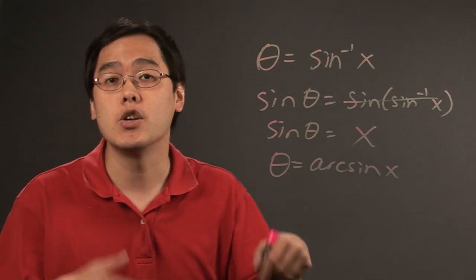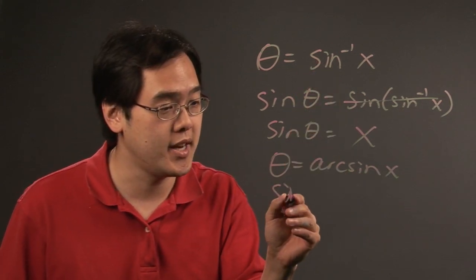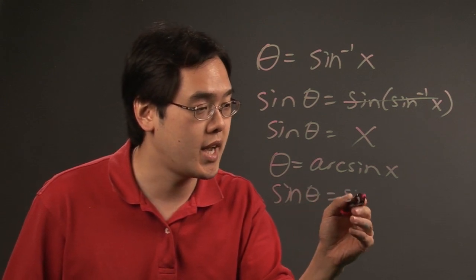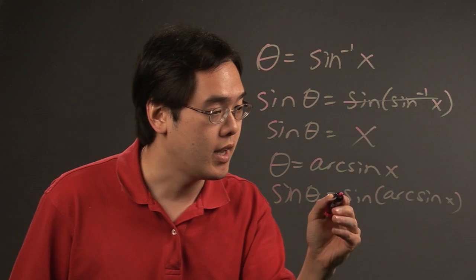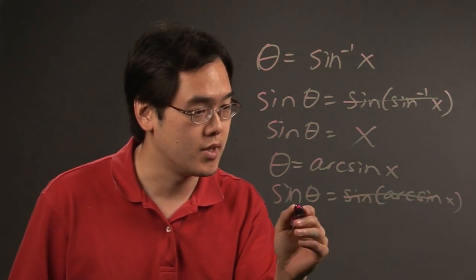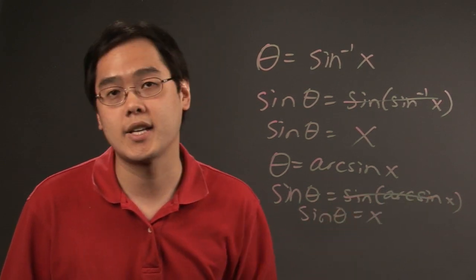since it has the same notation as sine inverse, you take the sine of both sides. You have sine theta is equal to sine arc sine of x, and this cancels. So you're left with sine theta is equal to x.